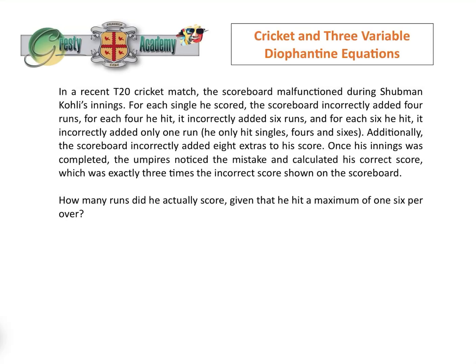This is a great question which combines two wonderful hobbies: cricket and Diophantine equations. In a recent T20 cricket match — T20 means there were 20 overs — the scoreboard malfunctioned during Shubman-Cohley's innings. Each single he scored, the scoreboard incorrectly added four runs. For each four he hit, it incorrectly added six runs. And for each six he hit, it incorrectly added only one run. He only hit singles, fours and sixes.